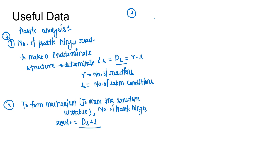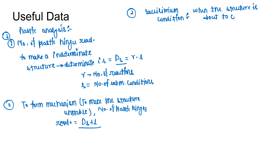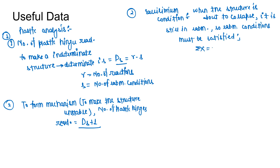Now coming to the second concept: in plastic analysis of any structure, the following conditions must be satisfied. The first condition is the equilibrium condition — when the structure is about to collapse, it is still in equilibrium, so summation Fx = 0, summation Fy = 0, and summation of moment about a point = 0.